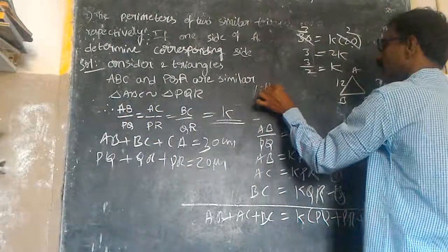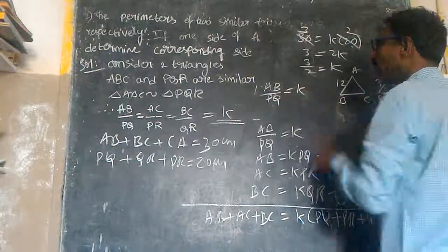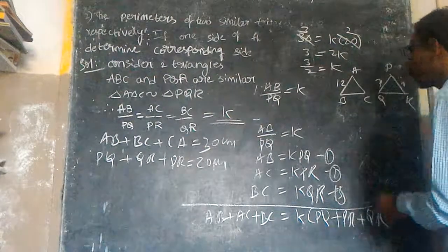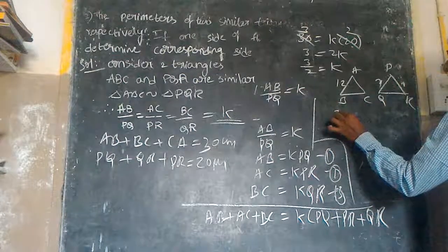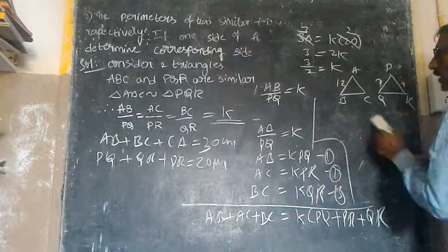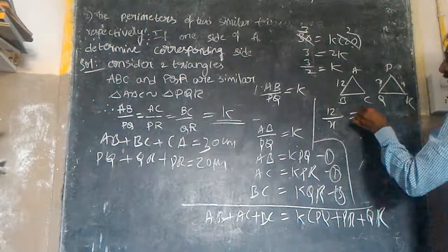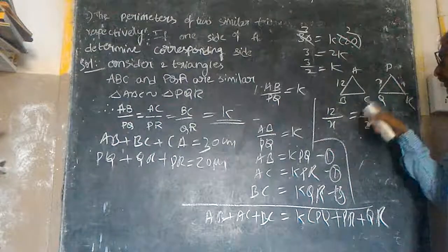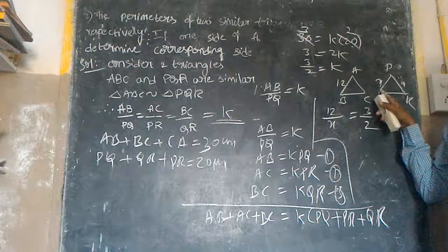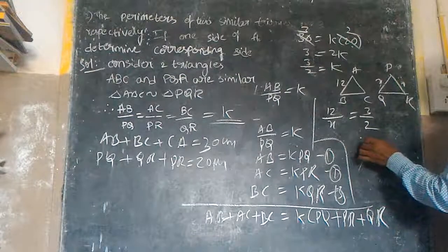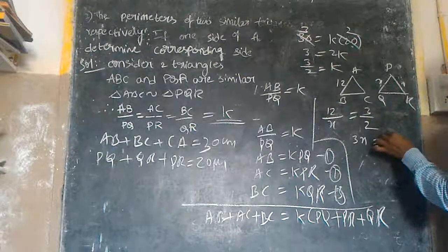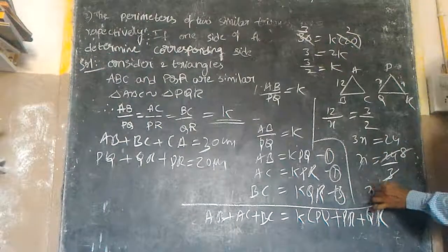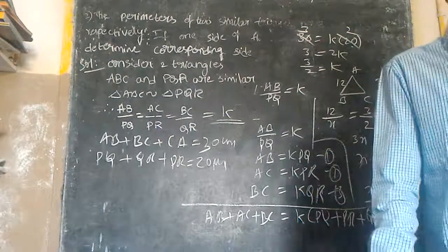AB is 12 centimeters, PQ is X. 12 by X is equal to 3/2. Cross multiply: 3X is equal to 24. X is equal to 24 by 3, which is 8. X is equal to 8 centimeters. The corresponding side is 8 centimeters.